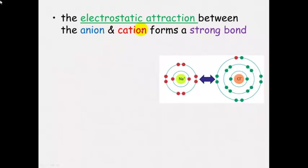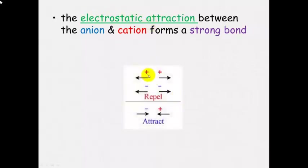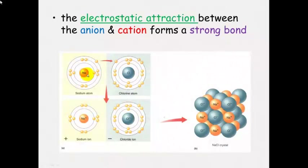It is the electrostatic attraction between the anions and the cations which forms the strong ionic bonds. The sodium ion has a positive charge and the chloride ion has a negative charge — these attract one another. Positive attracts to negative, and this is called electrostatic attraction. Like charges repel: positive and positive repel, negative and negative repel, but positive and negative attract.